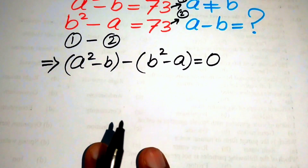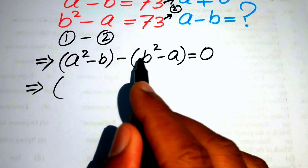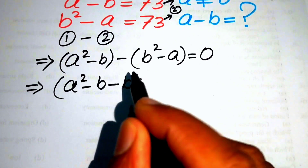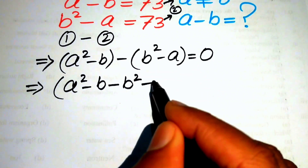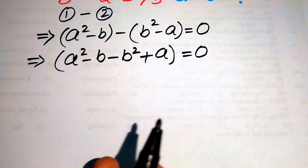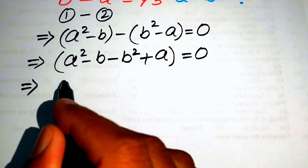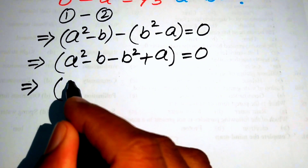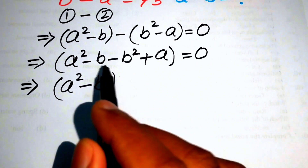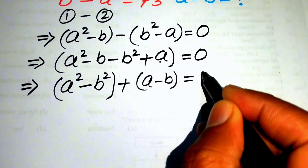We simplify by distributing the negative sign: a squared minus b minus b squared plus a equals zero. We then group the squared terms and the linear terms together, giving us (a squared minus b squared) plus (a minus b) equals zero.